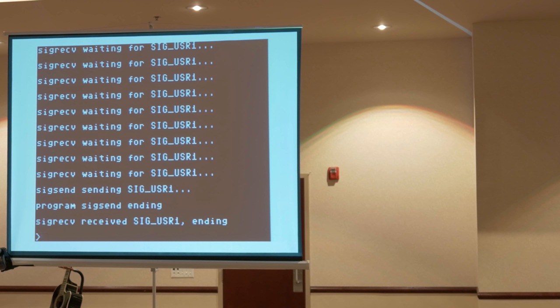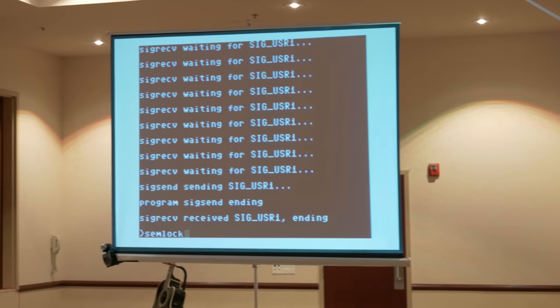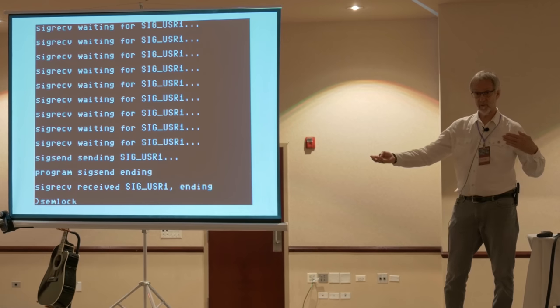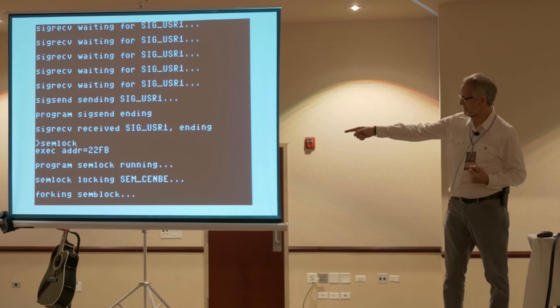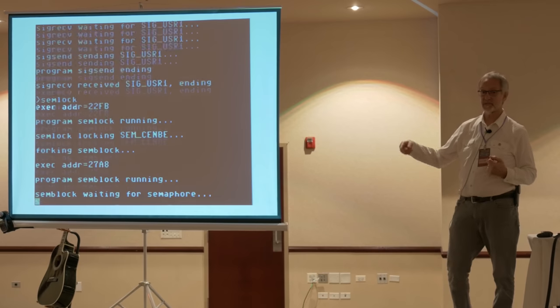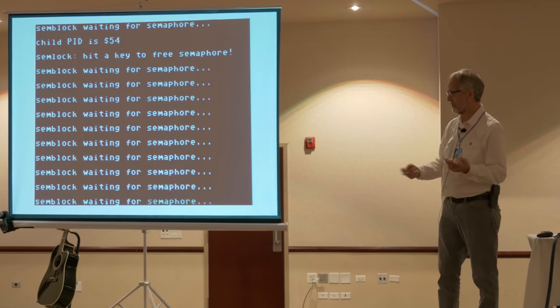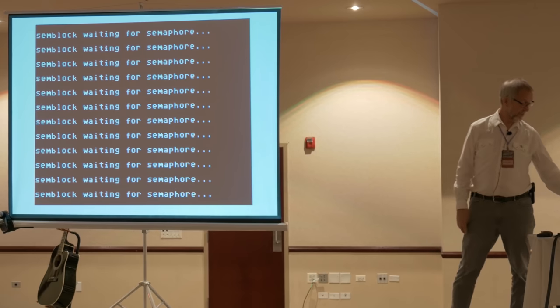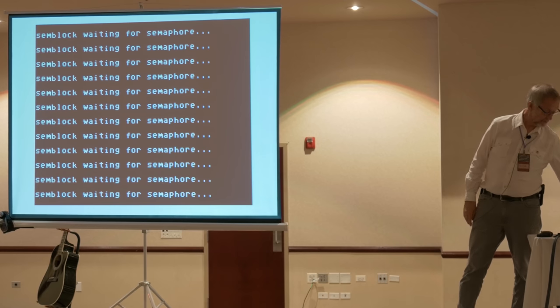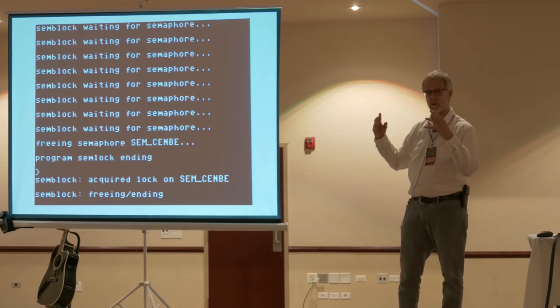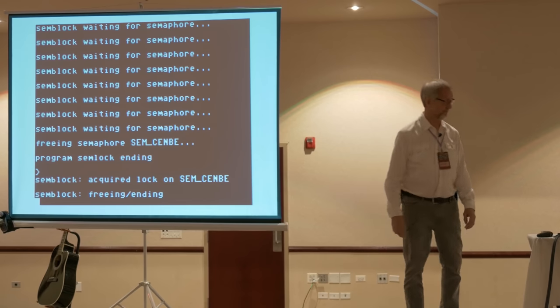Then the other thing I wanted to show is semaphores. And in this case, the two programs are semlock and semblock. The second one is not actually blocking. Well, more on that later. But the first program in this case is going to acquire a semaphore immediately when it starts and then fork the second program. So there he got a semaphore named Sem Senbi. Now he's forking the second program and the second program is going to try and do the same thing. He's going to try and acquire that same semaphore and he can't get it. He's trying over and over and saying, well, I'm waiting. I'm trying to get the semaphore. I can't do it. When I hit a key, the first program, I have to hit a real key, not a function key. Okay, so the first program, freeing semaphore and ending. And then the second one is like, oh, now I can get the semaphore. So now I'll end as well. So those are my demos. That's my story and I'm sticking to it.